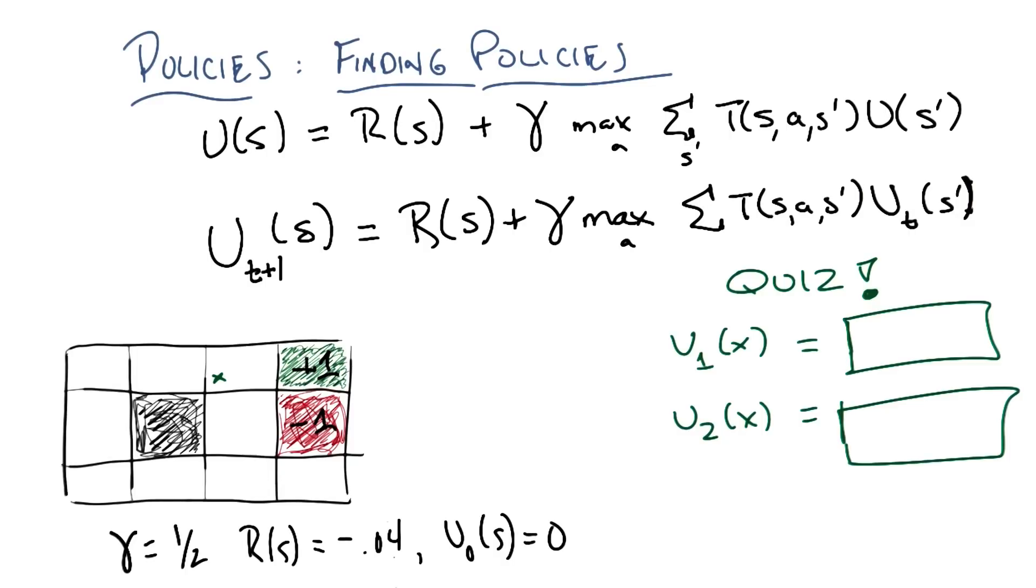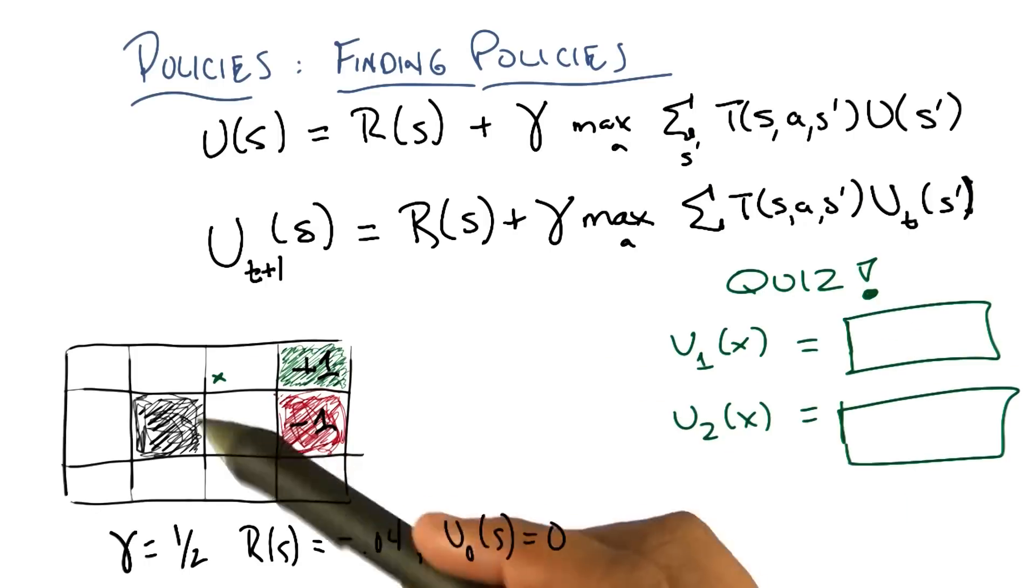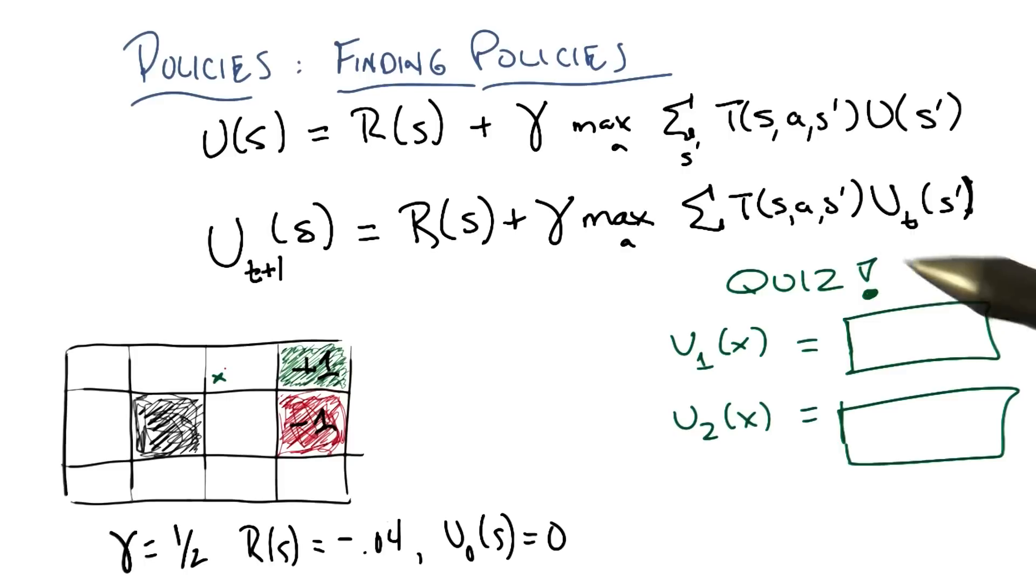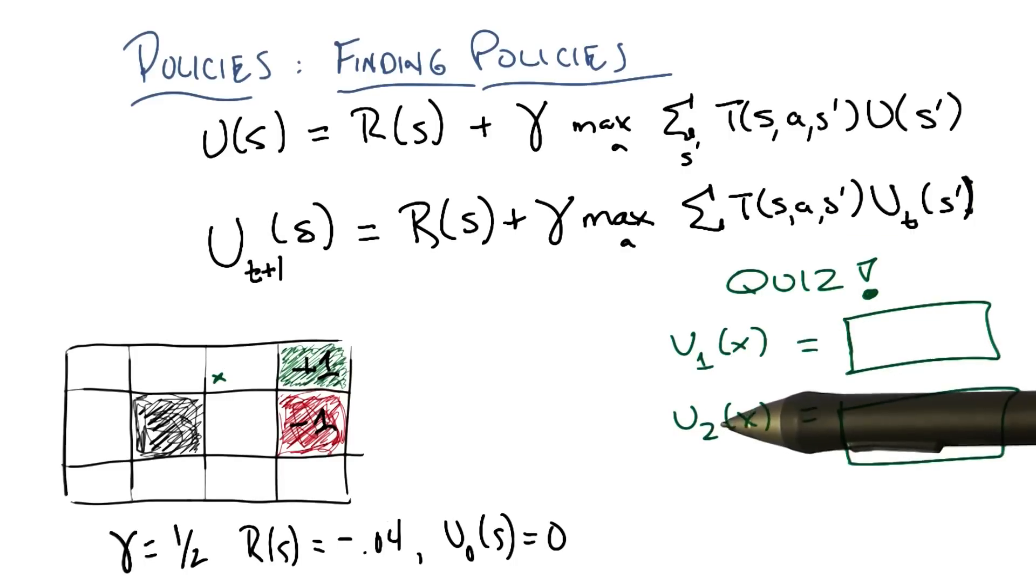So, gamma is one half, rewards are minus 0.04, arbitrary starting utilities at time zero is zero, except here at the absorbing states. Tell me how the utility here will evolve after one step or one iteration and two steps or two iterations. Okay then. Go.